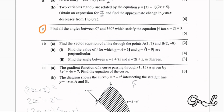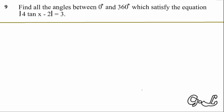The question says: find all the angles between 0 degrees and 360 degrees which satisfy the equation modulus of 4 tan x minus 2 is equal to 3. Let's now quickly get into the solving.